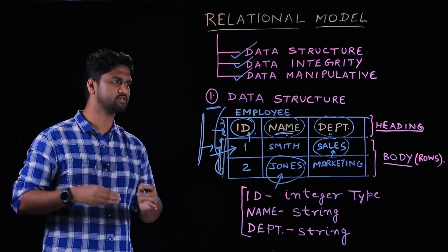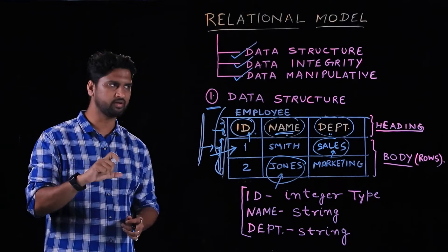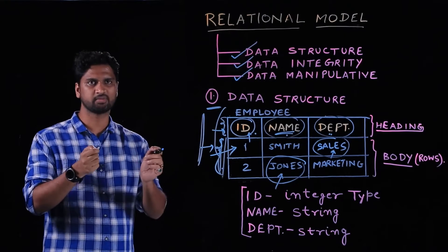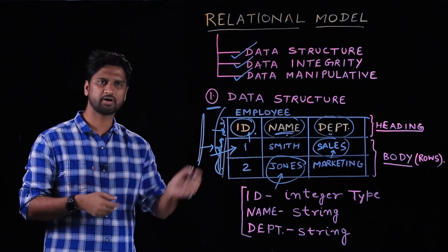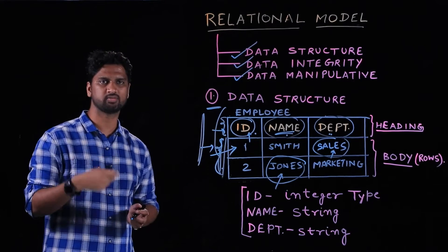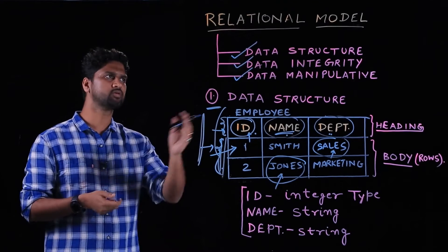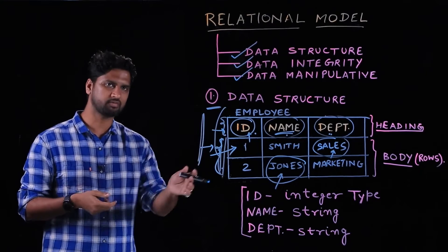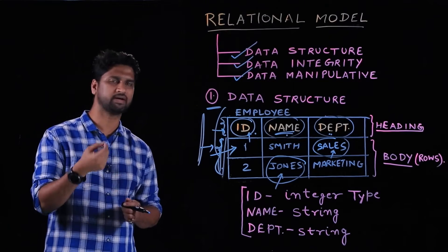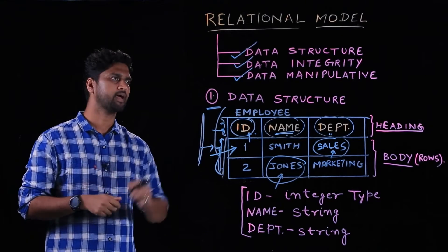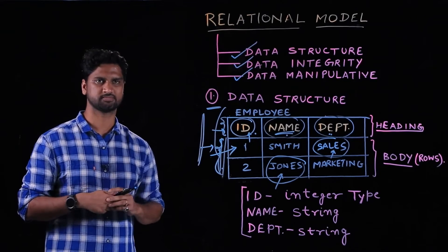A data structure consists of two things: the heading and the body. The heading describes the column names and the data types they support, and the body describes the actual values stored in the database. In the coming video, we will talk in more detail about how we ensure data integrity and how data manipulative works in the relational database management system.